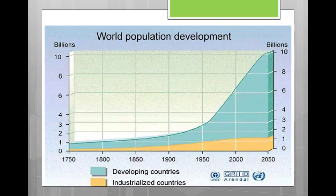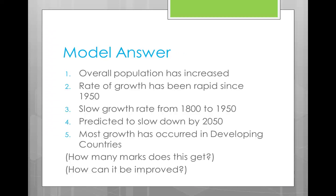Why don't you pause the video and answer the question. Having answered the question, hopefully the kind of things which are going to be included are: there has been an overall population increase; the rate of growth has been rapid since 1950; it was a slow growth rate between 1800 and 1950. By 2050 the growth is predicted to slow down, and most of the growth has been occurring in developing countries. You should now be asking yourself how many marks you think this answer gets.